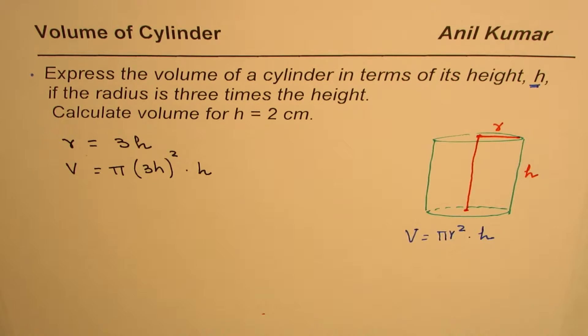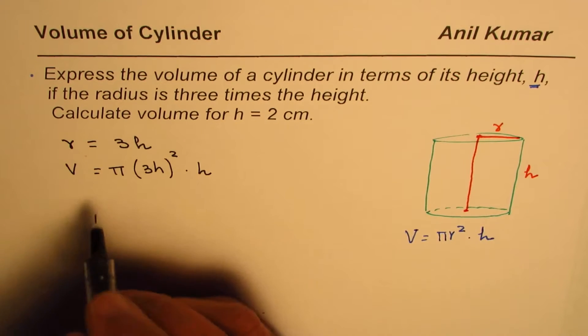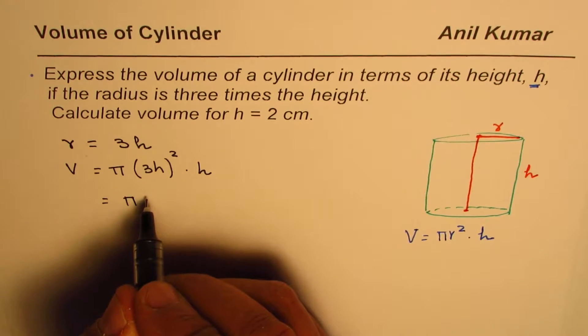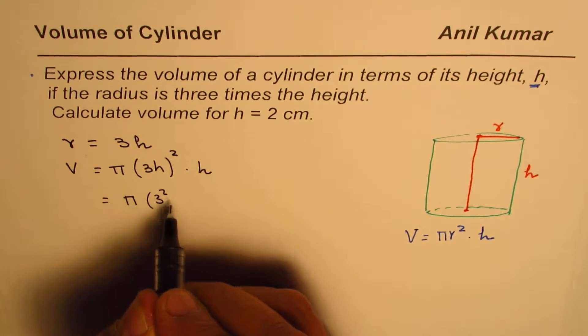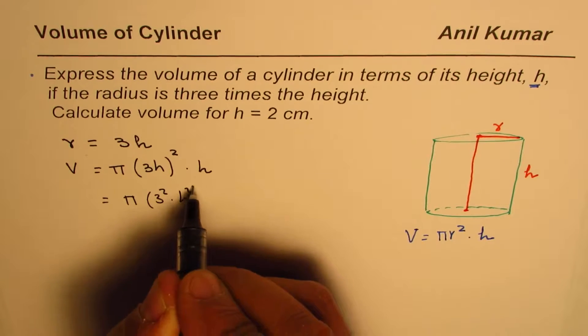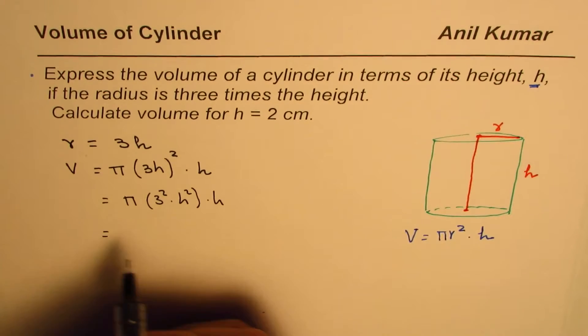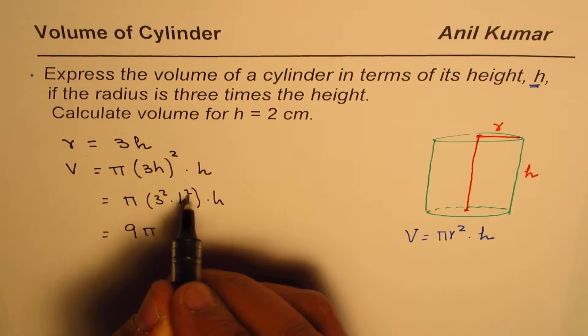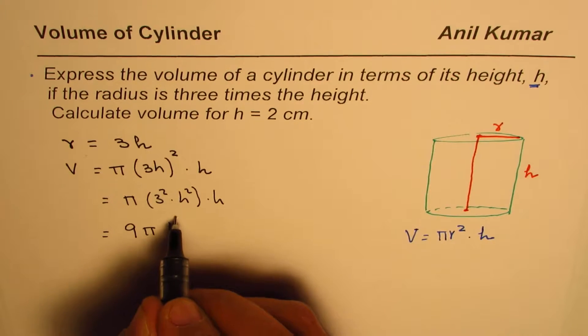Let's square this. So we have π, 3², so let me write this as 3² times h² times h. And when you multiply, 3² is 9, so you get 9πh², and h is h³.